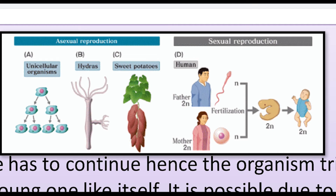Since life has to continue, the organism tries to produce a young one like itself through reproduction. For example, amoeba divides from one cell into two cells, each becoming a new amoeba. In hydra, budding takes place. In sweet potato, growth occurs from the root. In humans, the male produces sperm and the female produces eggs; fertilization takes place and a young one is produced. At a certain point, organ systems begin to lose effective working and the organism ages.